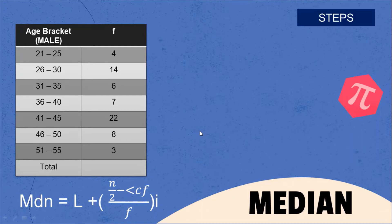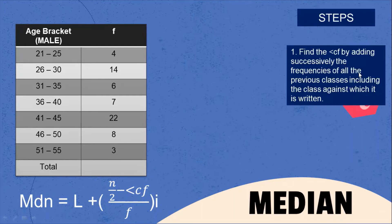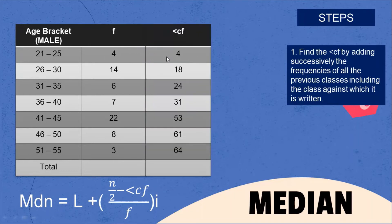The first step: find the less than cumulative frequency. Copy 4, then 4 + 14 = 18, 18 + 6 = 24, 24 + 7 = 31, 31 + 22 = 53, 53 + 8 = 61, 61 + 3 = 64.